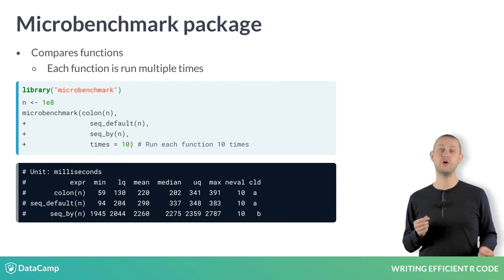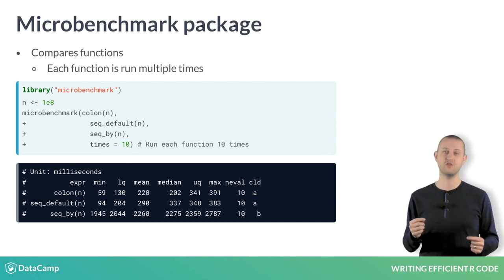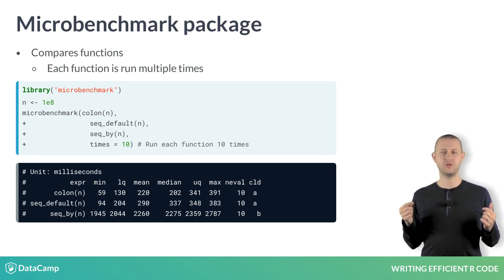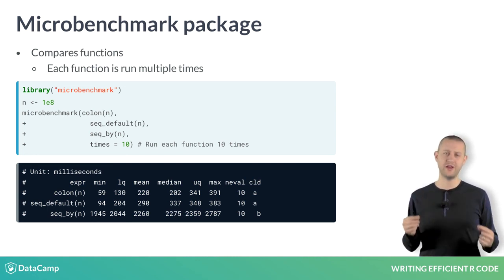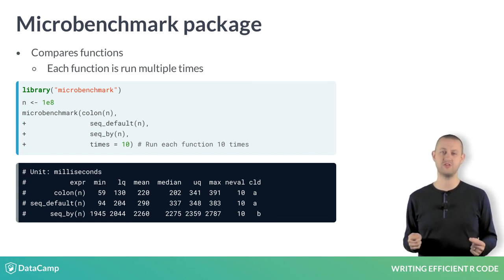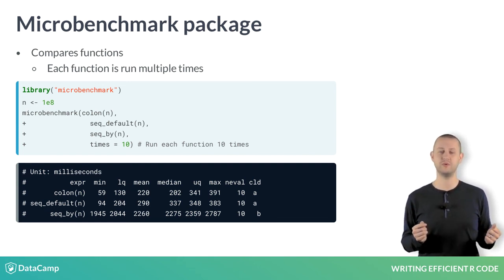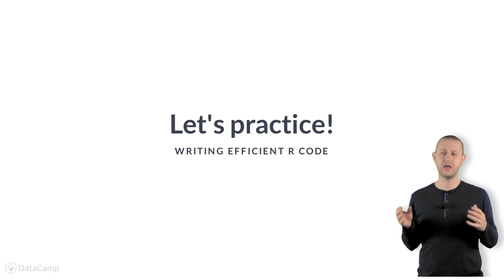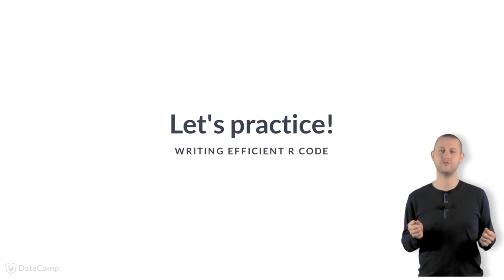As a bonus, the CLD column provides a statistical ranking of functions. As you would expect, the colon operator is the fastest function for generating a sequence of integers, and takes on average 220 milliseconds. In the next exercise, you'll get a chance to time various functions and calculate the relative times.